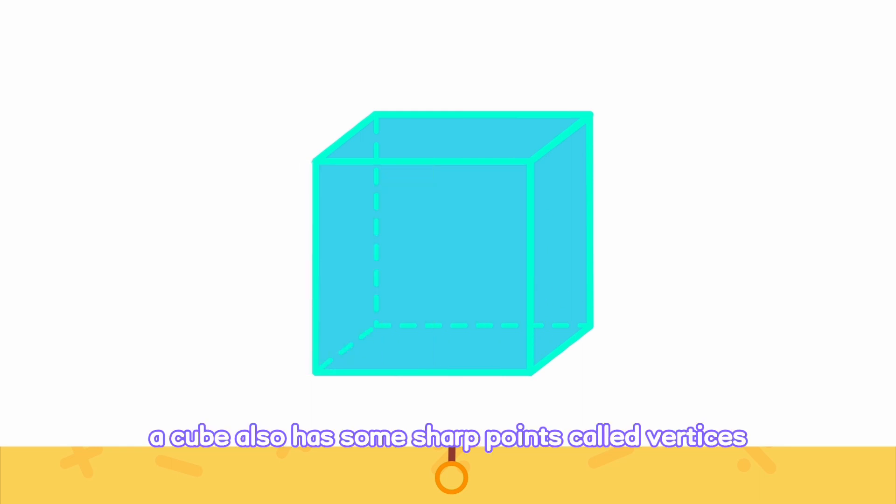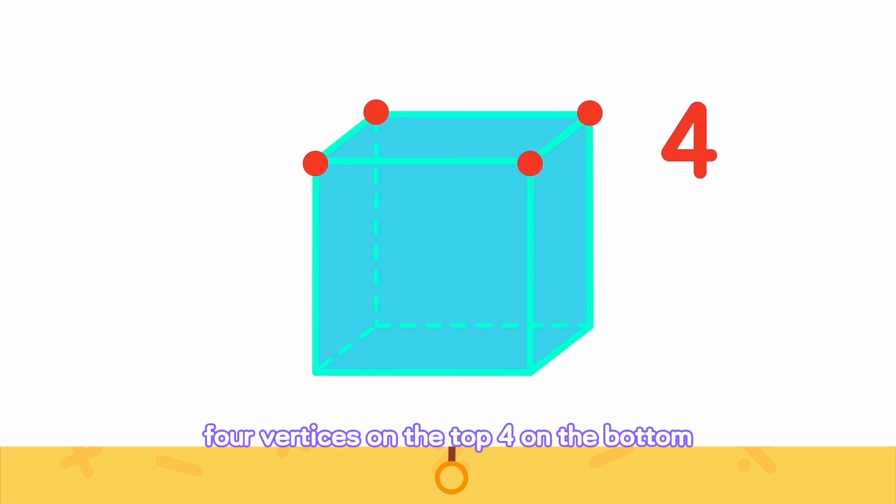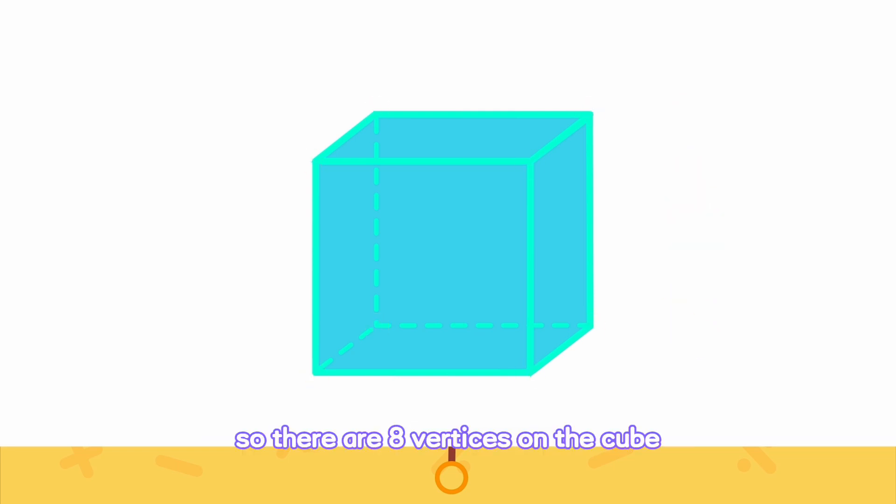A cube also has some sharp points called vertices. Let's count from top to bottom. Four vertices on the top, four on the bottom. So there are eight vertices on the cube.